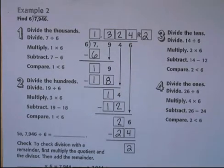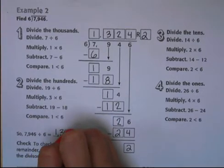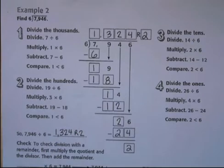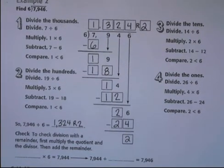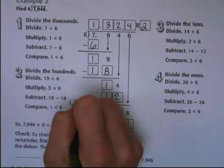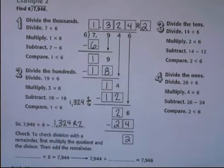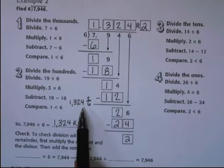So 7,946 divided by 6 is equal to 1,324 remainder 2. If you would like to write that as a mixed number, that would look like 1,324 and 2 out of 6. This is how you'll start writing in sixth grade. So if you're not quite there yet, don't worry. We'll get lots of more practice.